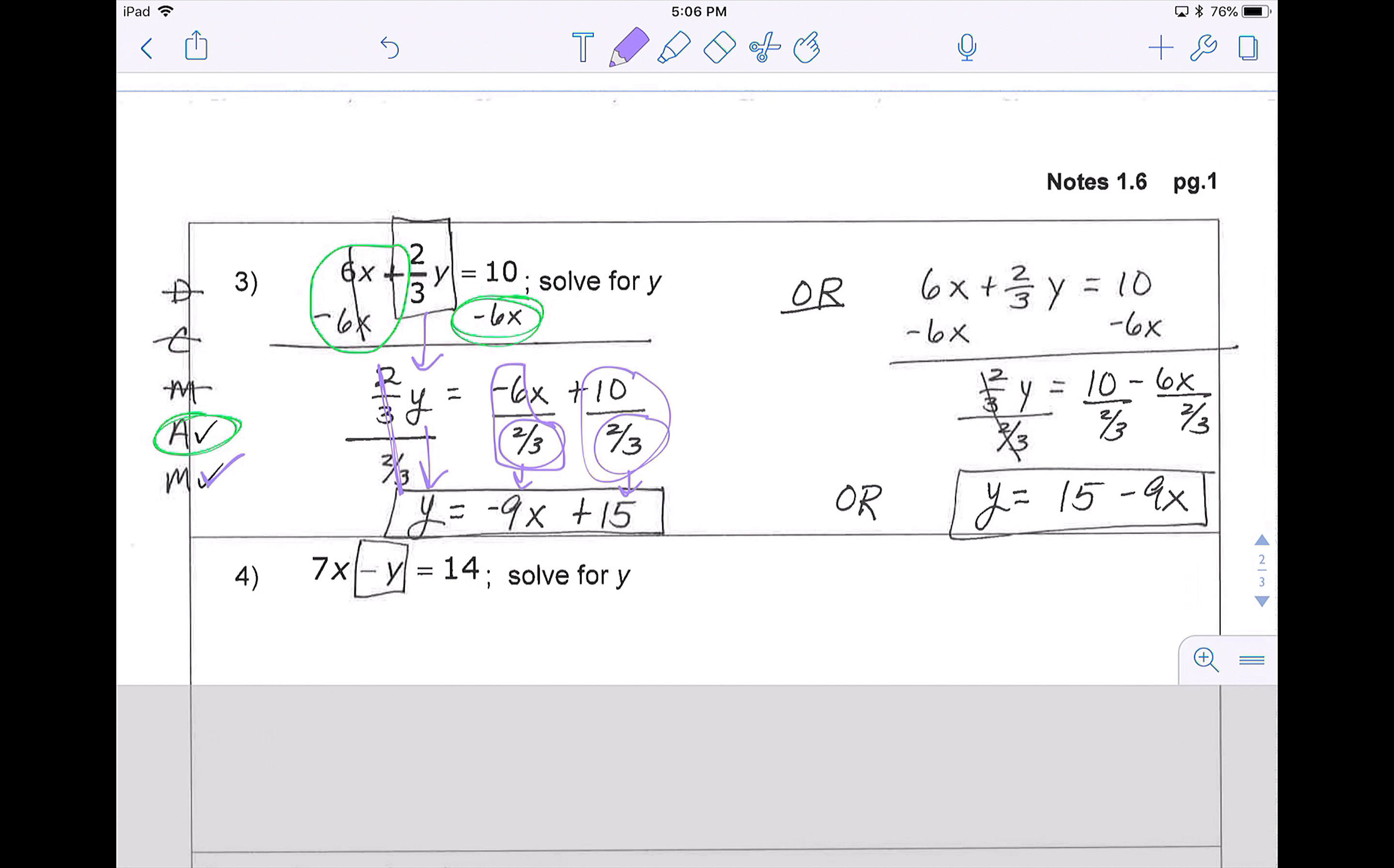Now, depending on how you write it, this is just showing you, you can put the 6x in front or the 6x in the back, and both of these mean the same thing. So the order on the right side does not matter as long as you keep the sign with the number that it goes with.